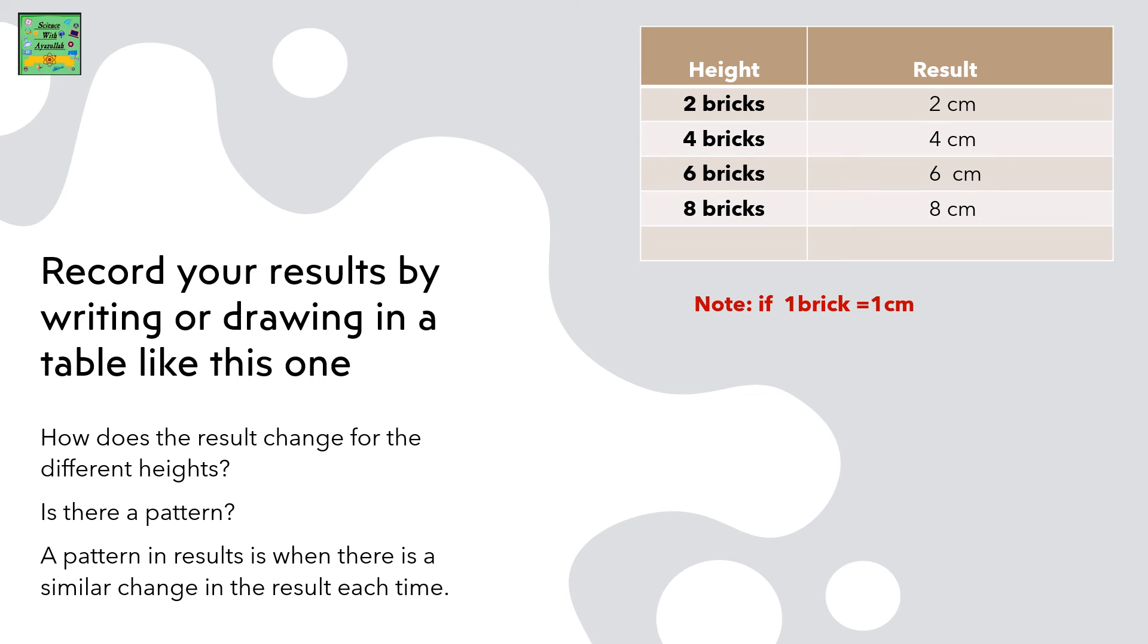Record your results by writing or drawing in a table like this one. How does the result change for different heights? Is there a pattern? A pattern in results is when there is a similar change in the result each time.